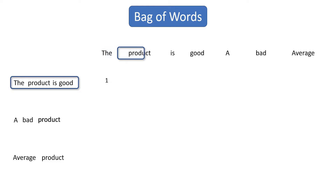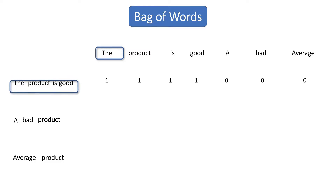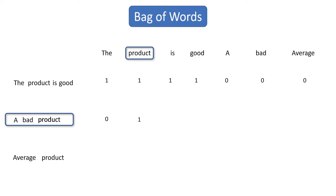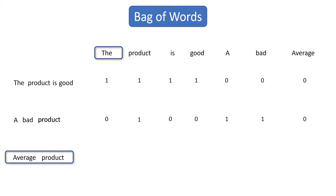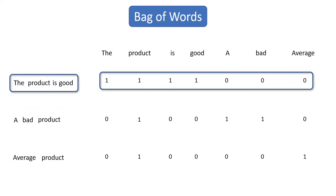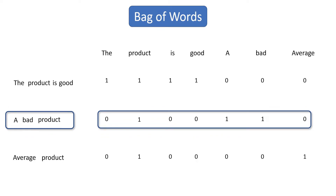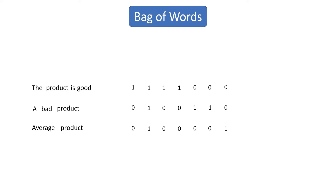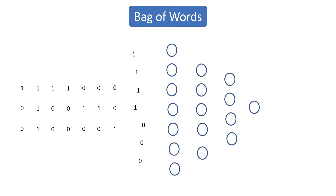Now let's take the second word and check whether this word is there in the first sentence or not. In this case, it is there, so let's put 1. If you do the same thing for all the remaining words, then this will be the output. Now let's do the same thing for the second sentence and then the third sentence. This will be the final output. We have successfully converted text into vectors. This is the vector representation for the first sentence, the second sentence, and this is how bag of words works.